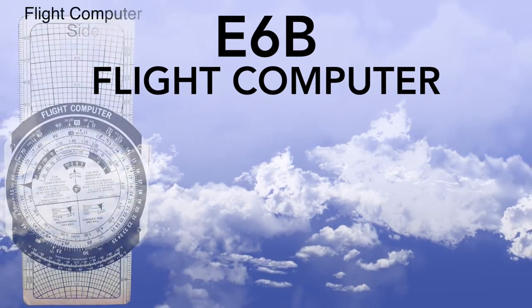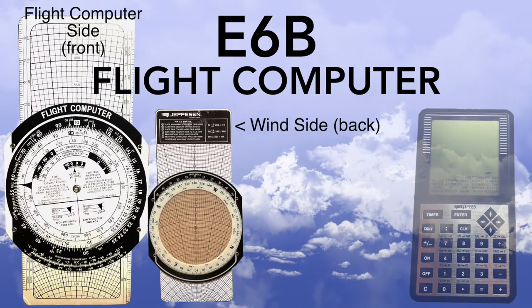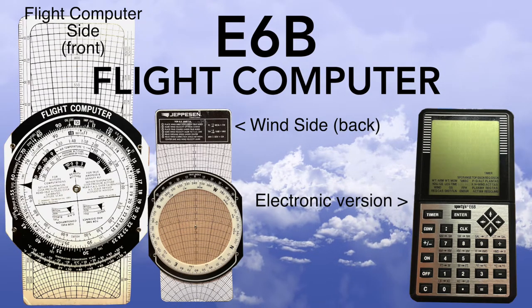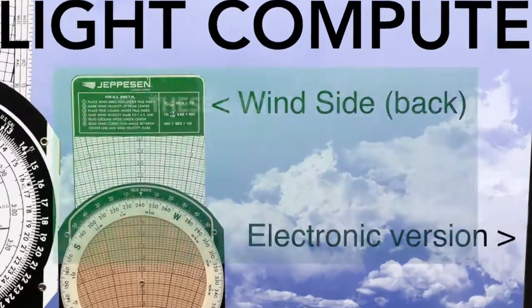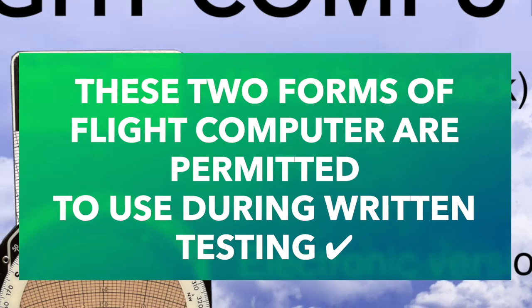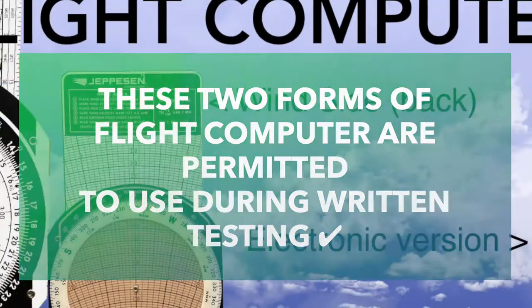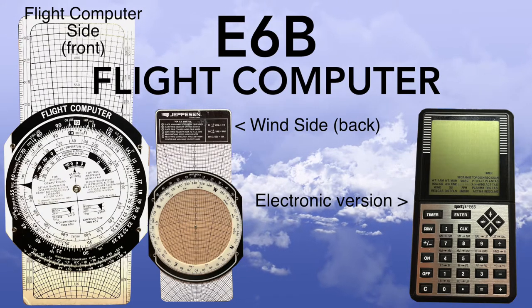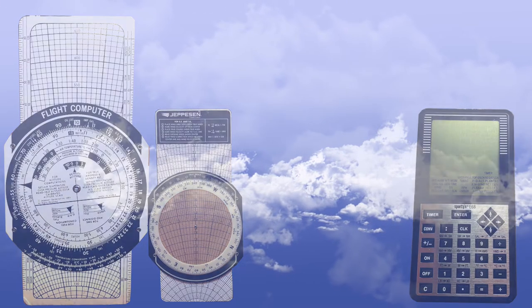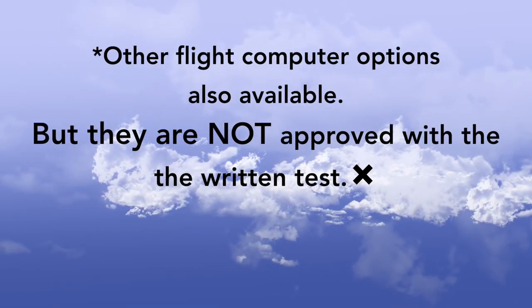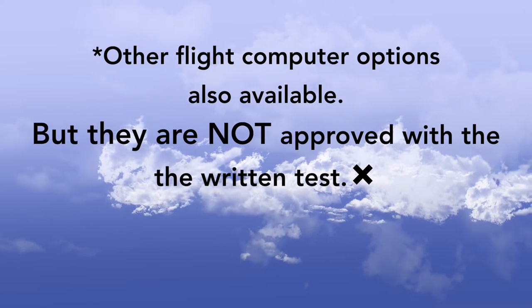You may have already seen at least one of the two common forms of the E6B flight computer. There is the analog manual version and the battery powered electronic version. These specific models of the manual and electronic flight computers are the only two forms approved to bring and use during your written test.